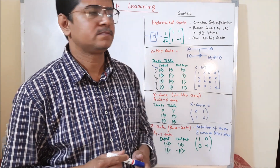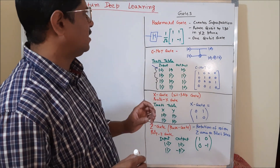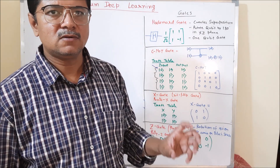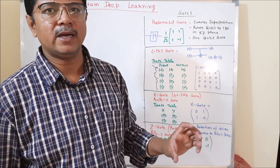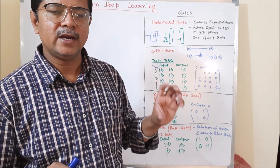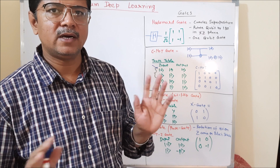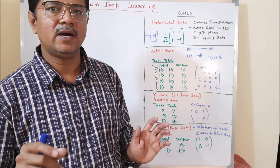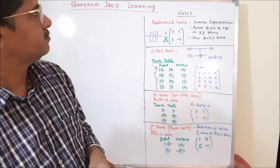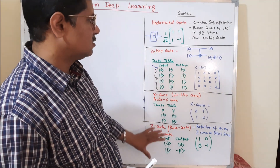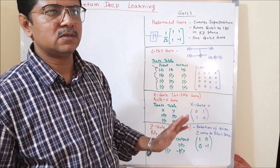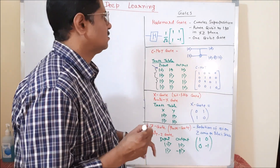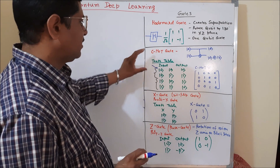Hello, I am Miraj Kumar. In this part of the tutorial, I will try to explain about different quantum gates. These quantum gates are very important and useful in developing the quantum circuits, which are part of the quantum deep learning architecture. Without going through those gates, it is not possible to construct the quantum deep learning architecture.